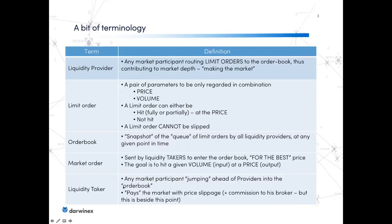A liquidity taker is any market participant which chooses to jump ahead of other limit order providers — the liquidity providers — and go straight into the order book. The way you pay for this privilege of jumping the queue is by agreeing to being slipped, positively or negatively, but you are going to be slipped in most cases when you take a market order.